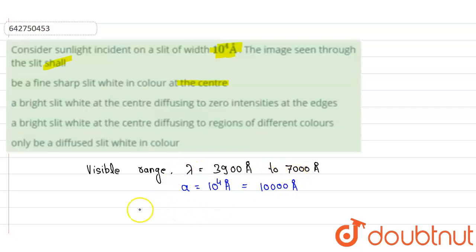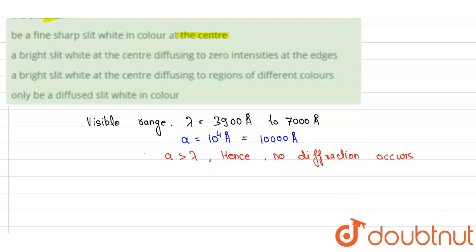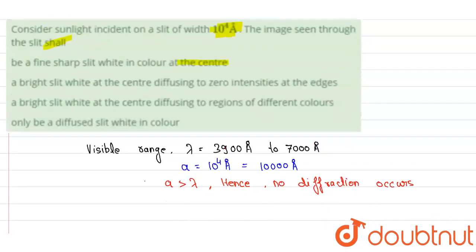This a is much greater than our visual range of light. Hence, no diffraction will take place; no diffraction occurs.